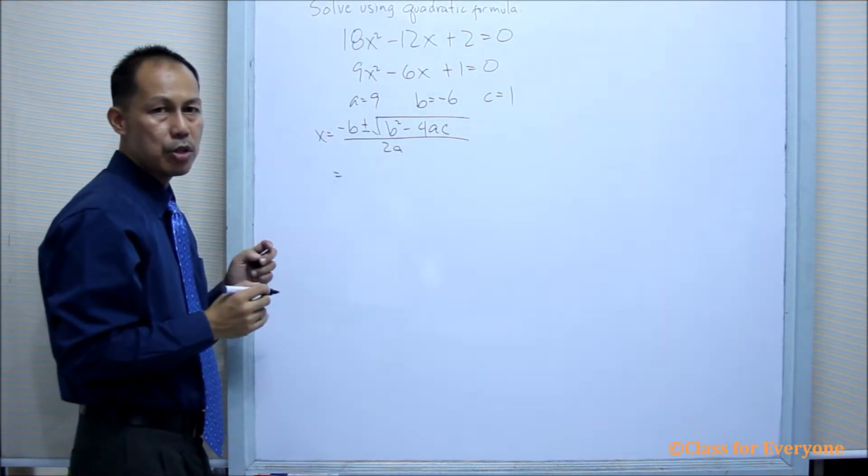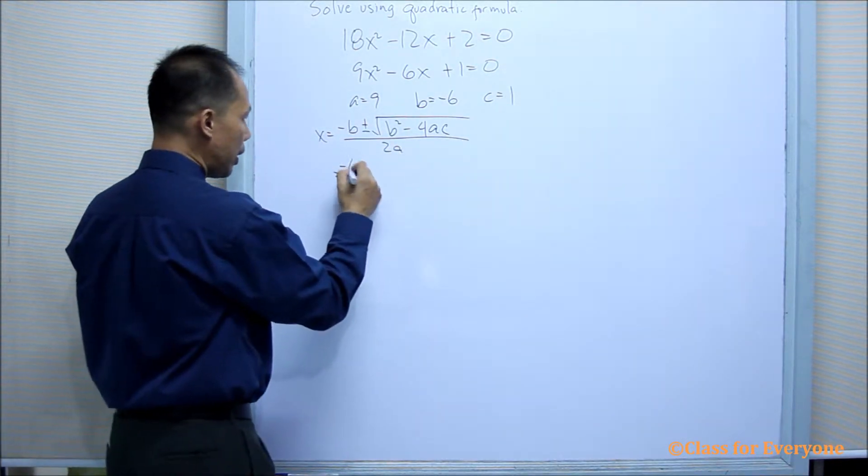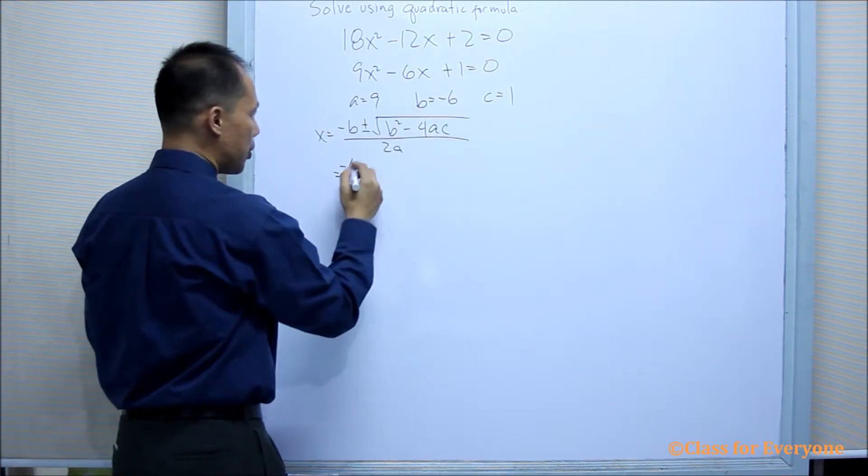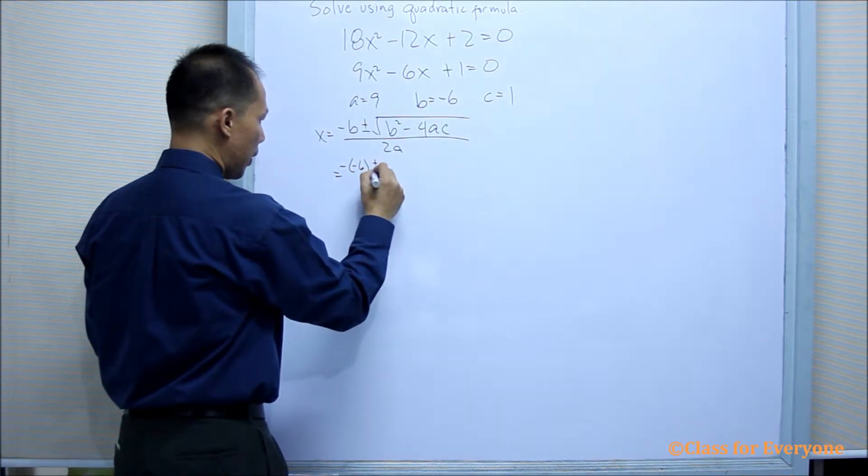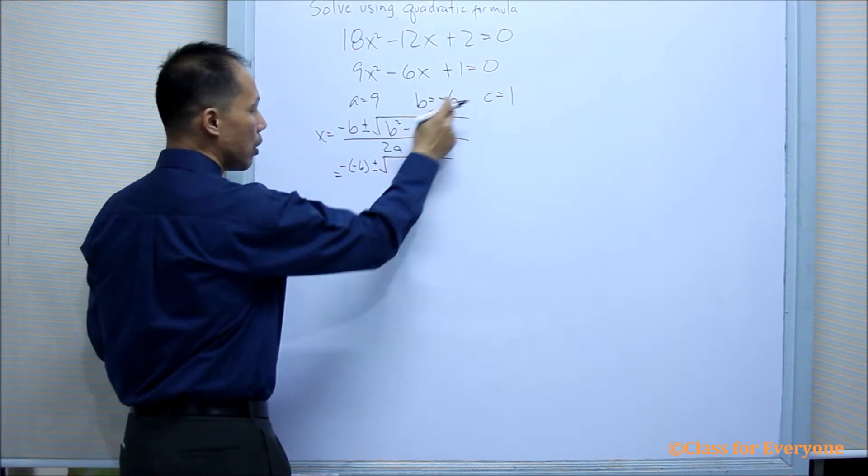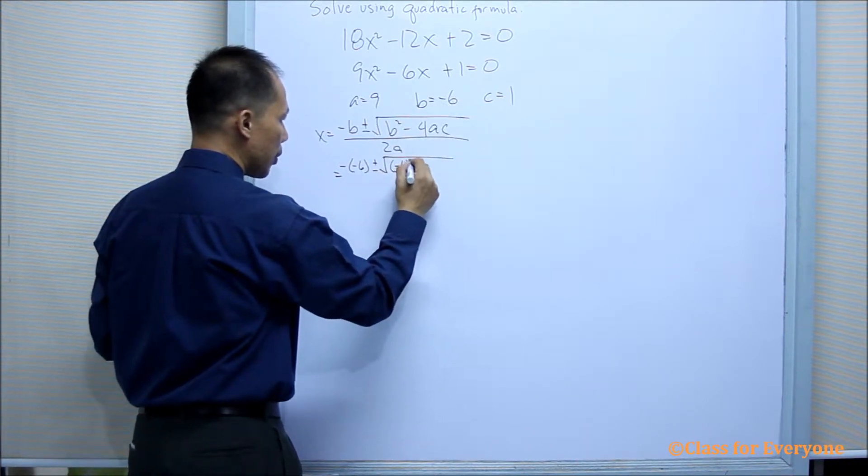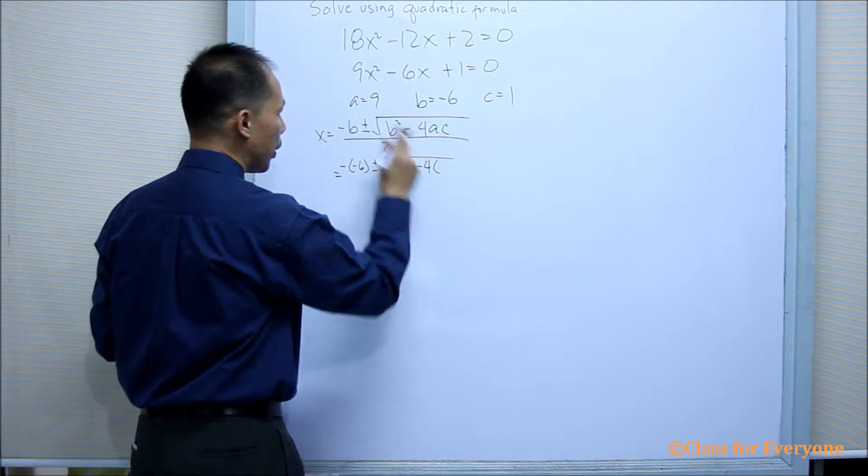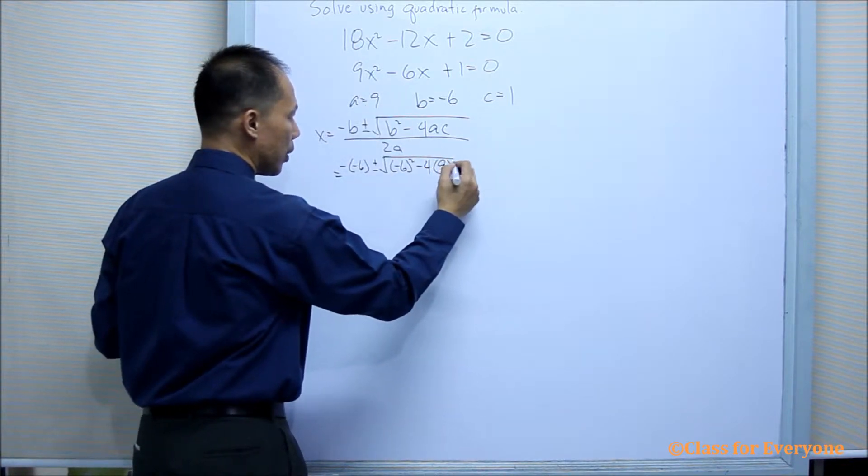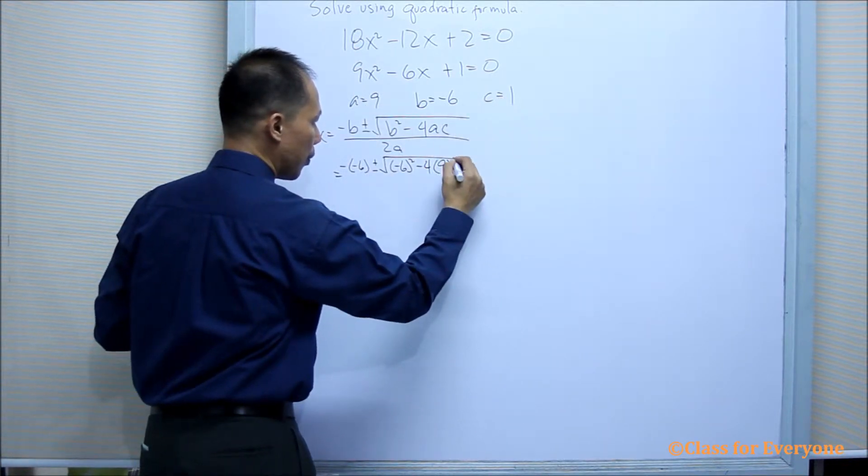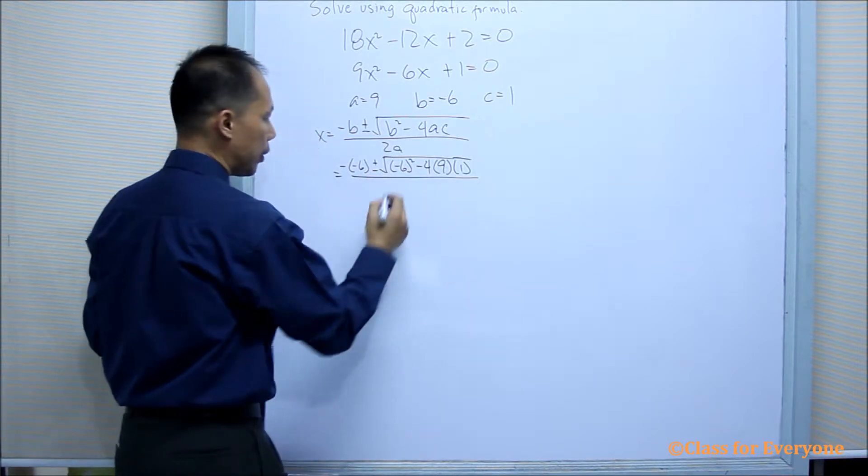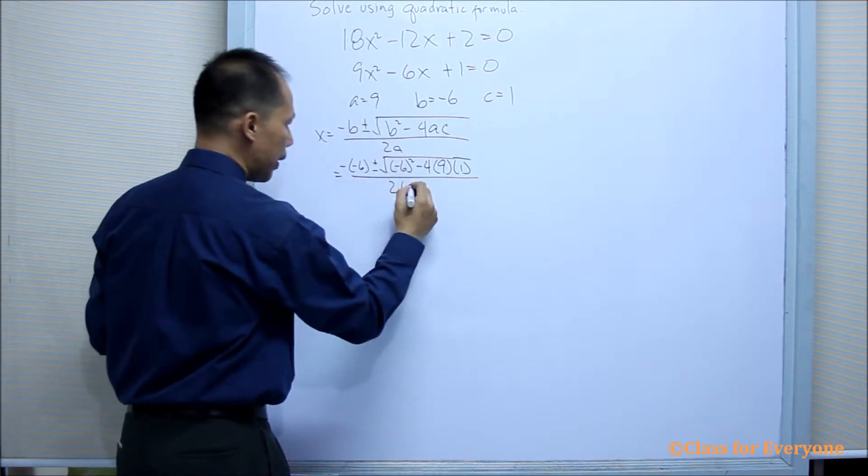And then by substitution, negative B is negative 6, plus or minus the square root of B, which is negative 6, squared minus 4 times 9 times 1, all over 2 times 9.